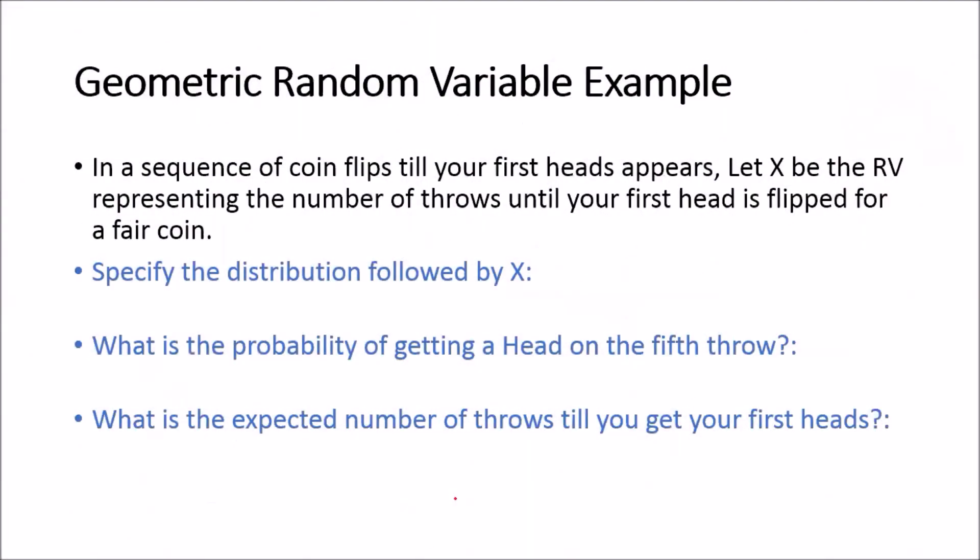So let's look at some examples. In a sequence of coin flips, this should be independent coin flips, be careful, independent coin flips, until your first head appears. Let X be a random variable that represents the number of throws until your first head is flipped for a fair coin.